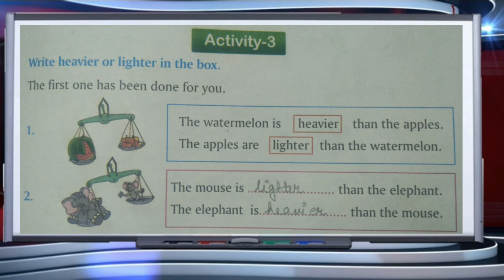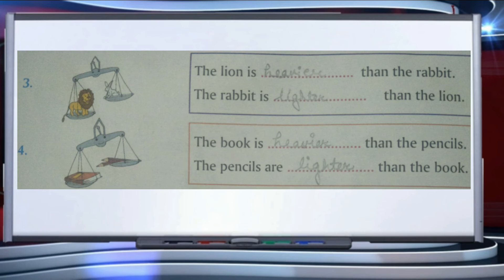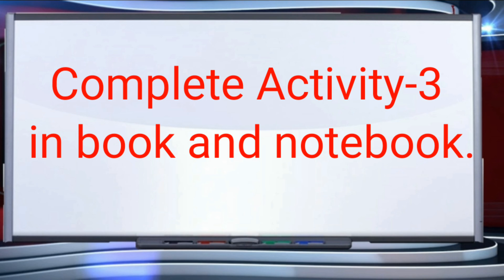The elephant is heavier than the mouse. Third part — the lion is blank than the rabbit. The lion is heavier than the rabbit, and the rabbit is lighter than the lion. Very good! Fourth one — the book is blank than the pencil. The book is heavier than the pencils, and the pencils are lighter than the book.